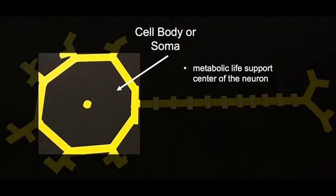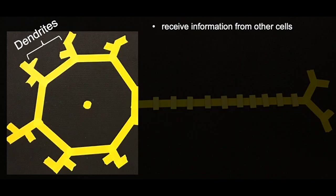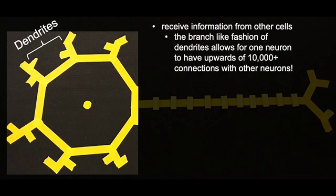The cell body is the metabolic life support center of the neuron. The dendrites are branches of the cell body that receive information from other cells. The branch-like fashion of dendrites allows for one neuron to have upwards of 10,000 or more connections with other neurons.